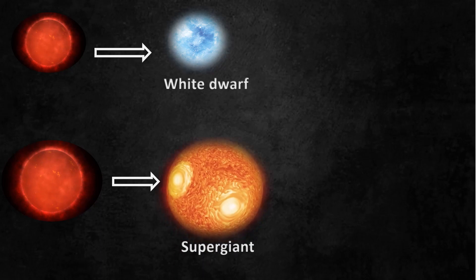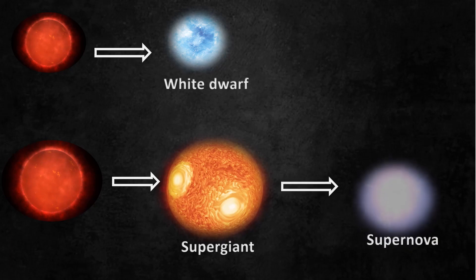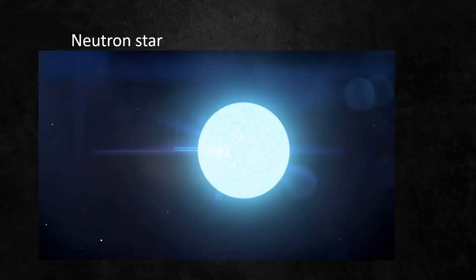Supergiant contracts so quickly that a big explosion called supernova occurs. After the explosion, a neutron star is formed.